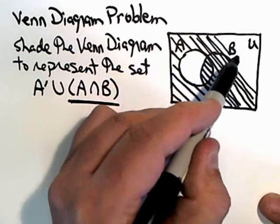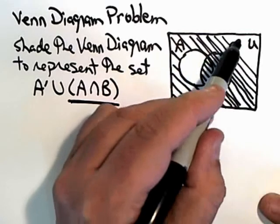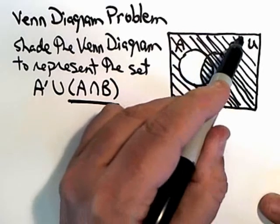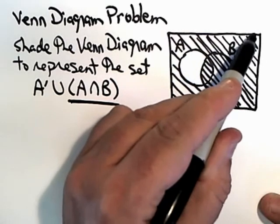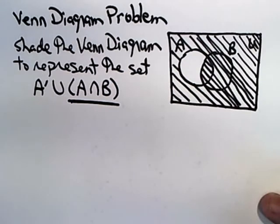When you see this done in your text or on the screen, the shading is probably going to be solid in a different color. I'm simply crosshatching to make it easier on myself.